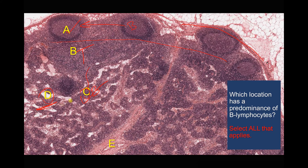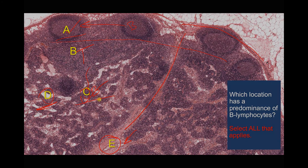D is the medullary sinus — networks of interconnected lymphatic channels. E is a trabecula of connective tissue, an extension from the capsule that also contains blood vessels. It is connective tissue, not lymphoid tissue, and does not contain lymphocytes — neither B nor T lymphocytes. So the correct answer is A and C.